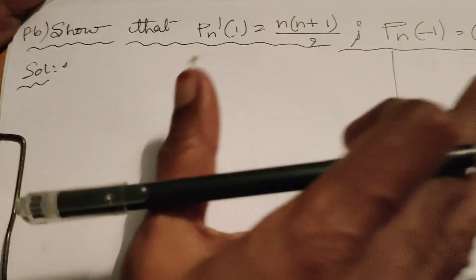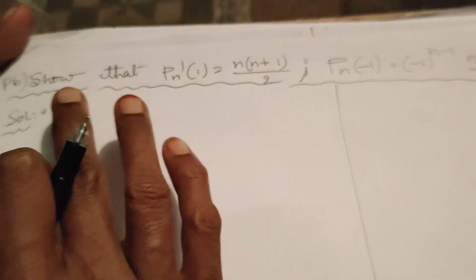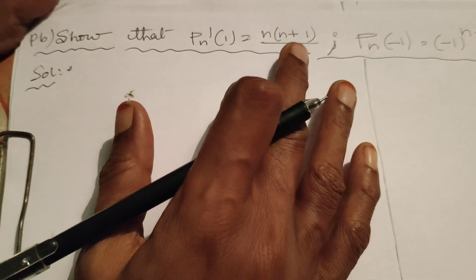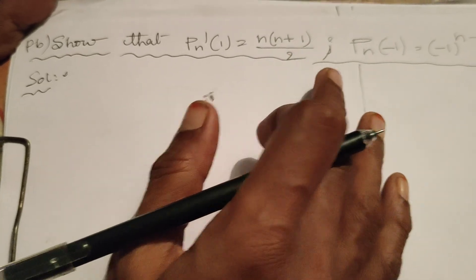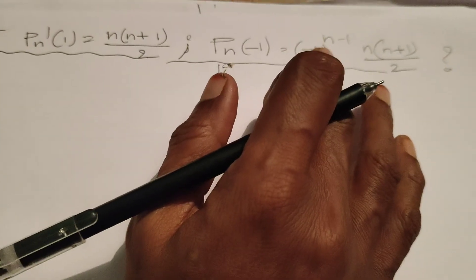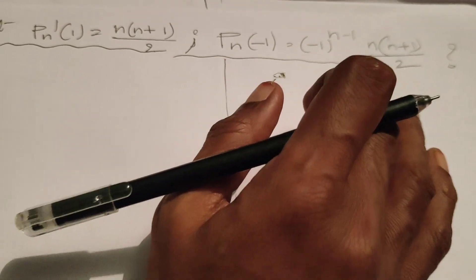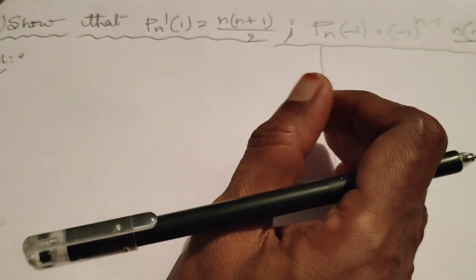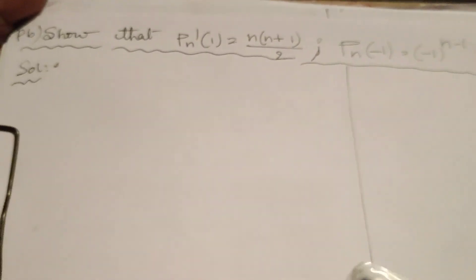Hi everyone, this is Dr. Yati. Today we are going to show that P'n(1) equals n(n+1)/2, and P'n(-1) equals (-1)^(n-1) times n(n+1)/2. This problem we are going to solve using the Legendre polynomial or Legendre differential equation.